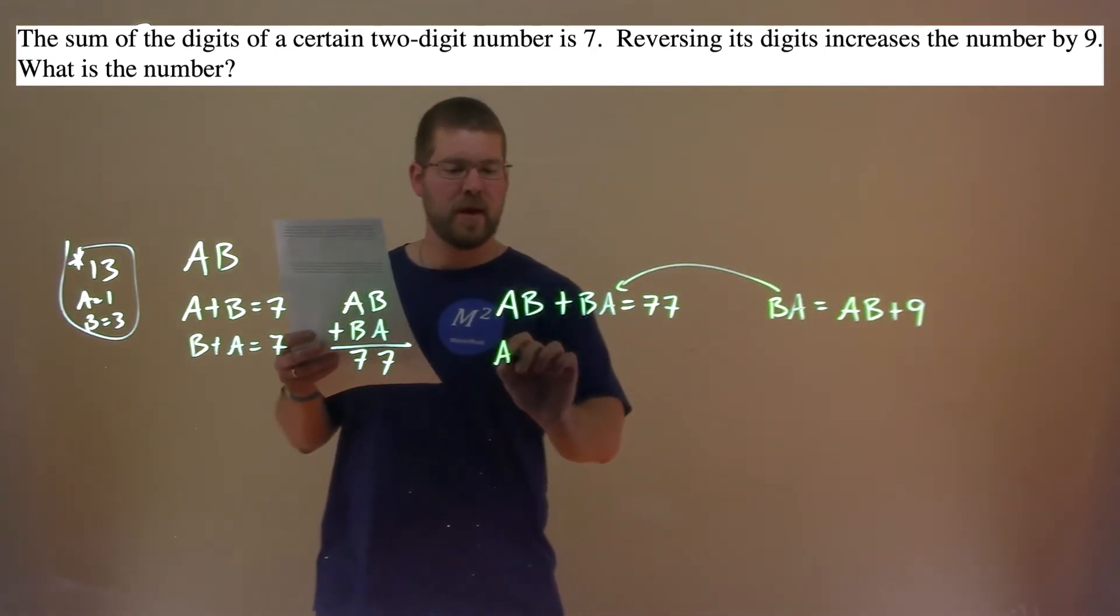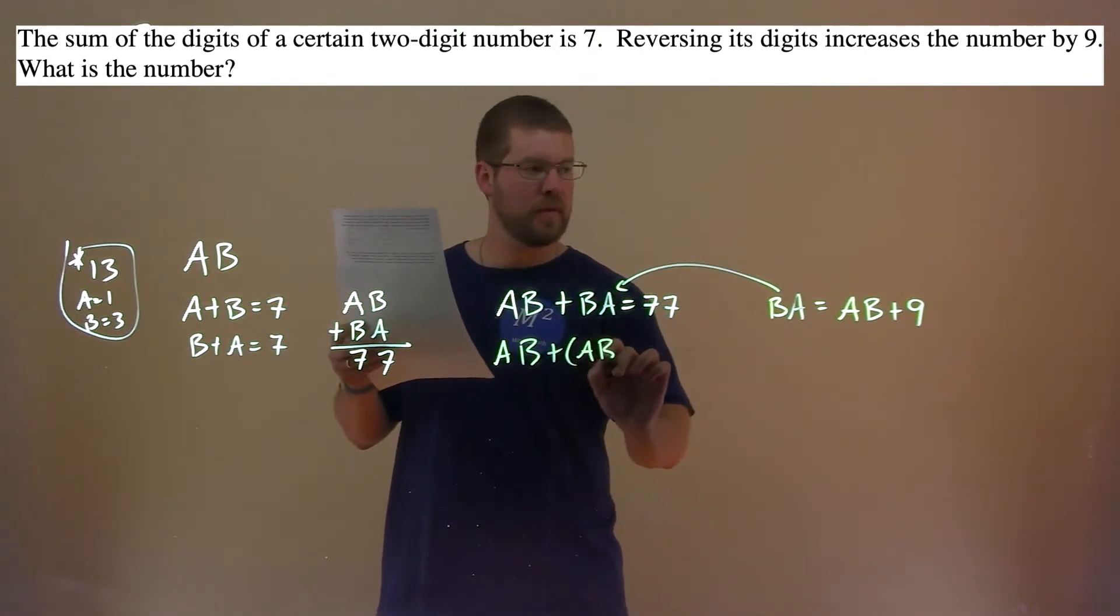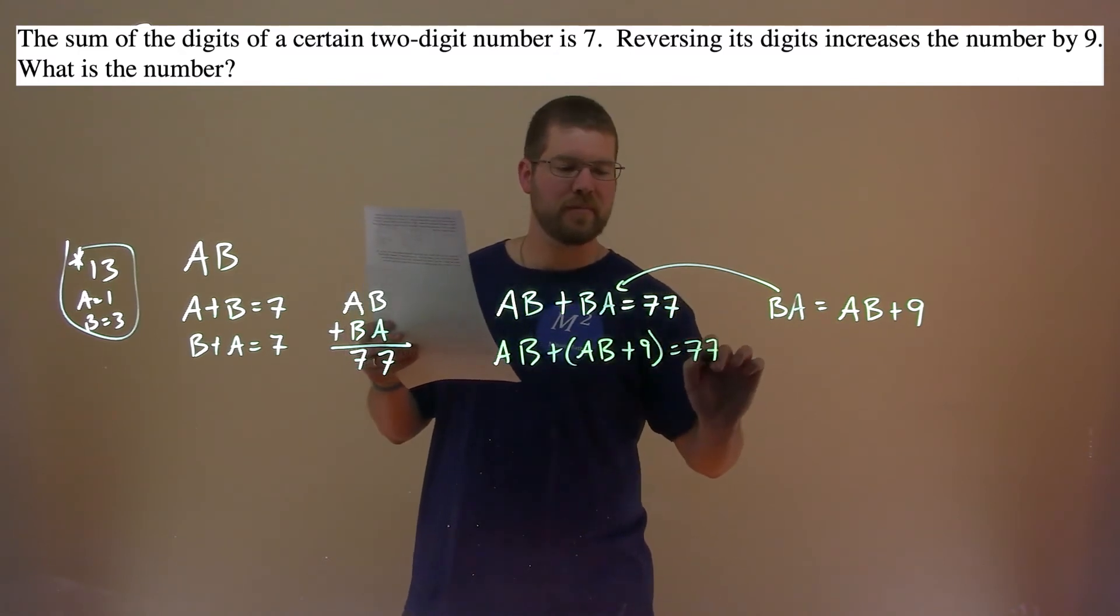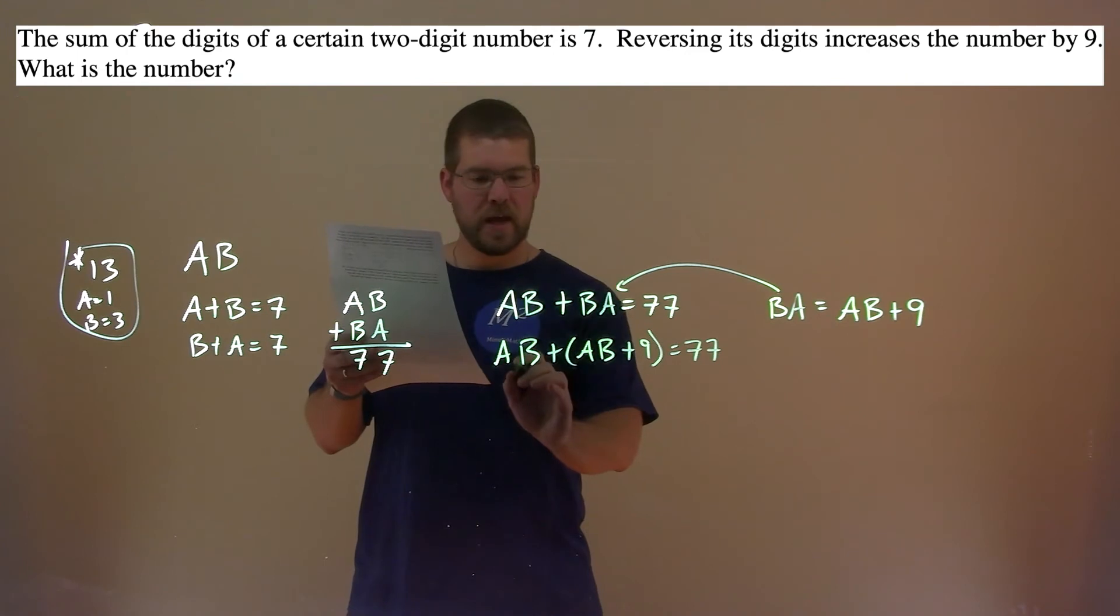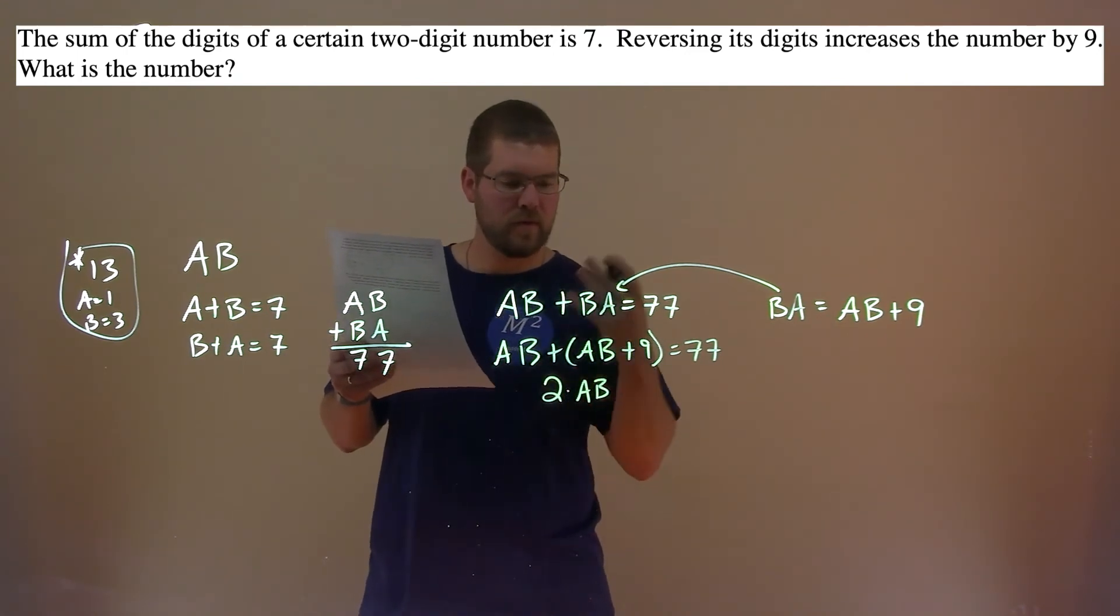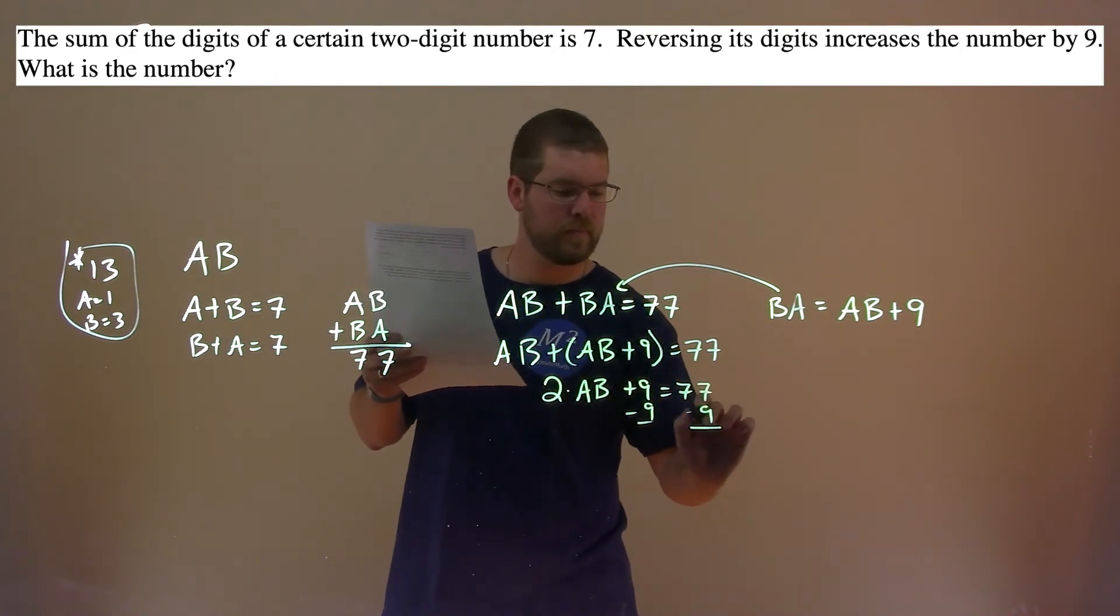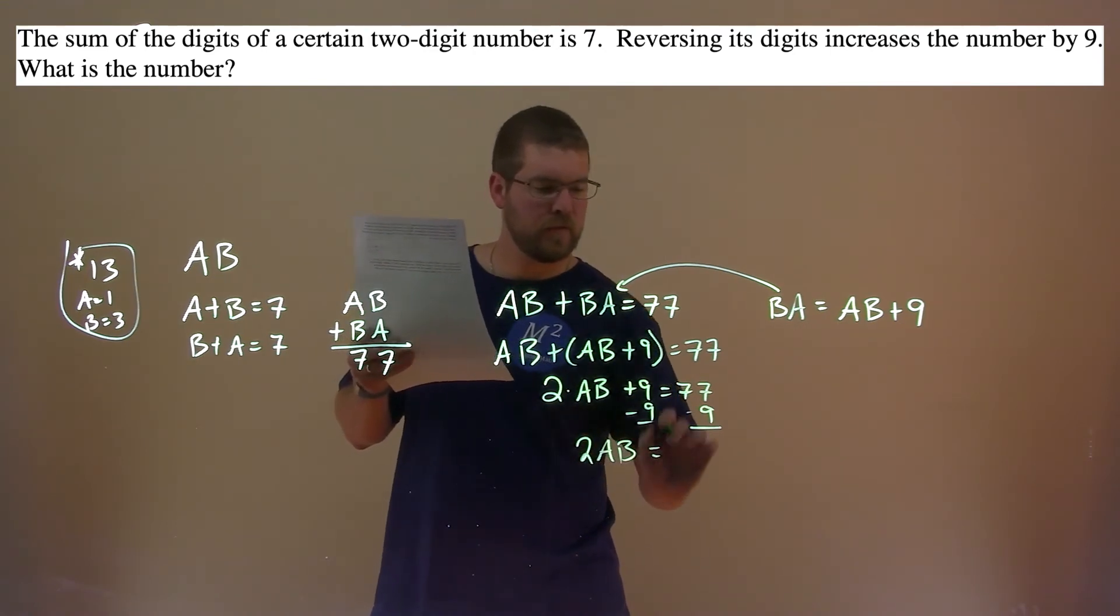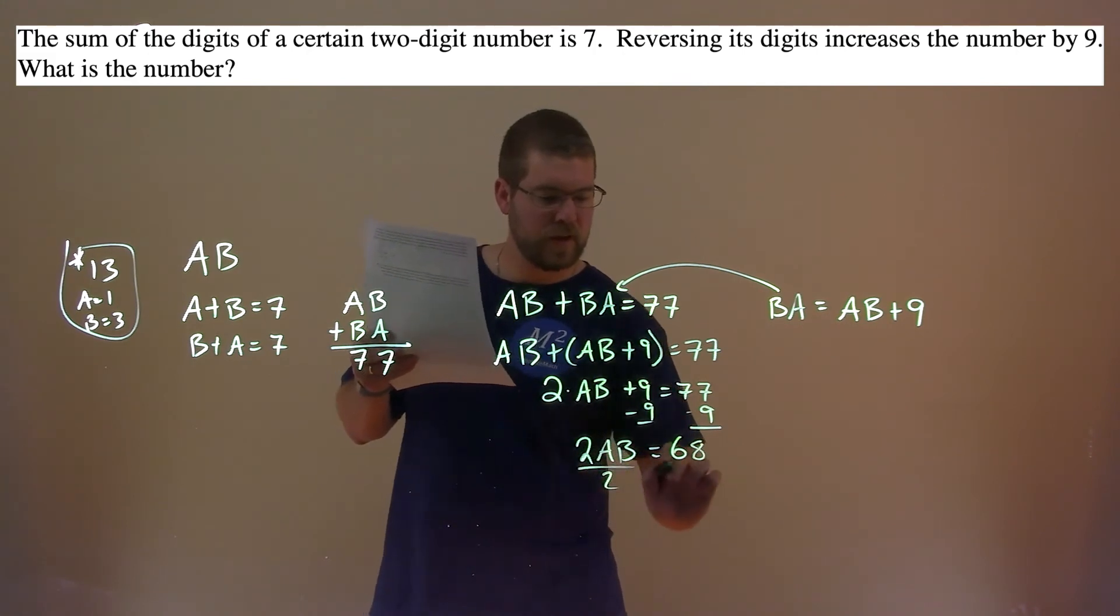So AB plus, instead of BA, I'm putting AB plus 9, and that equals 77. Now we're simplifying. AB plus AB is 2 times AB. So 2AB plus 9 equals 77. Subtract 9 from both sides. 2AB equals 77 minus 9, which is 68. Divide both sides by 2.